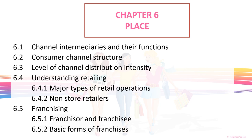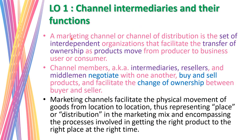Hi guys, assalamualaikum and greetings. In this video I'm going to explain Chapter 6, which is on Place. As you know, we have covered two pieces of our marketing mix: product and price. In Chapter 6 we're going to learn about place. There are basically five things we'll cover: channel intermediaries and their functions, the consumer channel structure, the level of channel distribution intensity, major types of retailing including non-store retailing, and lastly franchising.